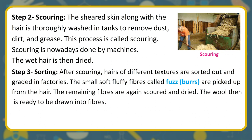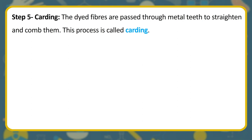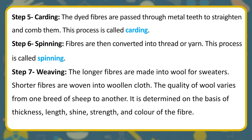Step 4 — Dyeing: The natural fleece of sheep and goat is white, brown, or black in color. The fibers are dyed in desired colors. Step 5 — Carding: The dyed fibers are passed through metal teeth to straighten and comb them; this process is called carding. Step 6 — Spinning: Fibers are then converted into thread or yarn; this process is called spinning. Step 7 — Weaving: The longer fibers are made into wool for sweaters; shorter fibers are woven into woolen cloth. The quality of wool varies from breed to breed and is determined by thickness, length, shine, strength, and color of the fiber.